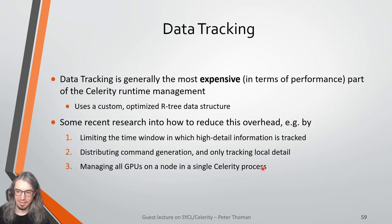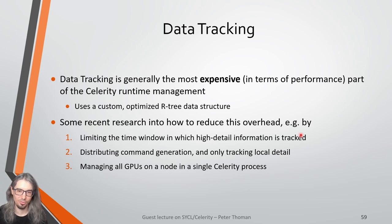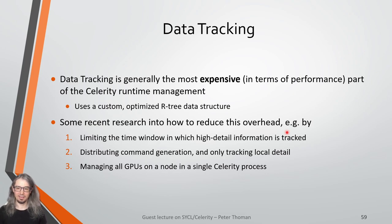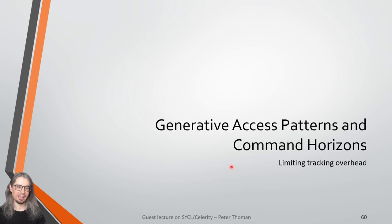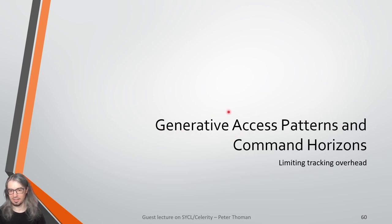The original implementation of Celerity used one process per GPU — on a typical HPC node with four GPUs, it would be running four Celerity processes that did not directly share any management information. The current research version of Celerity uses a single process to manage all GPUs on a node. These optimizations are each based on a paper you can consult for more detailed information. Regarding command horizons, the idea is particularly useful for limiting generative access patterns while still providing parallelism and asynchronicity.